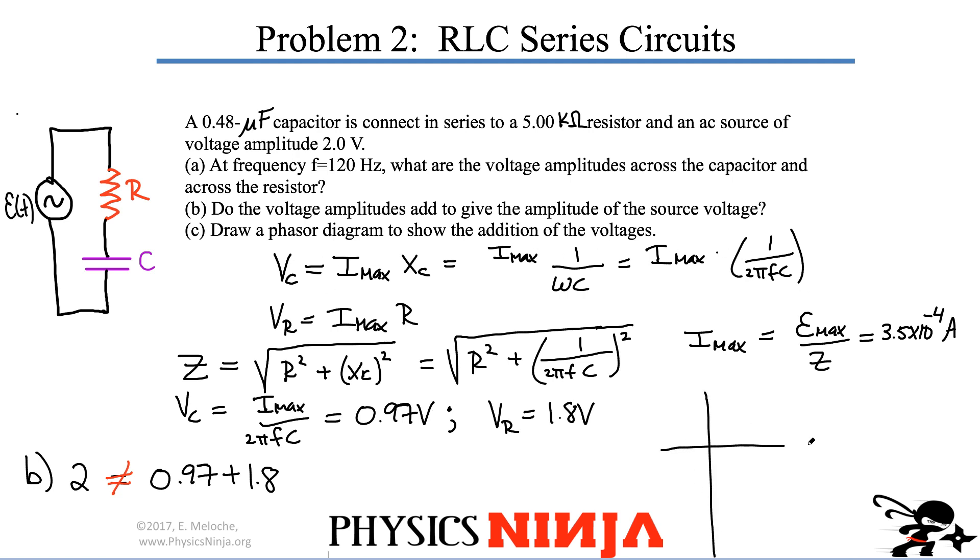The phasor diagram for this circuit. If we put the voltage of the resistance, we can add this one along the x-axis like this. And the voltage across the capacitor is this one. We'll call this 0.97 volts. The voltage across the resistor is 1.8 volts. And at the end, the maximum voltage from this AC source, what we just calculated here were both components. This here should give me my 2 volts, which is the amplitude of the AC source.